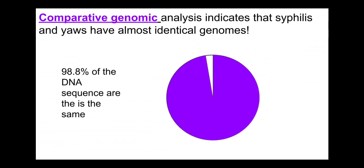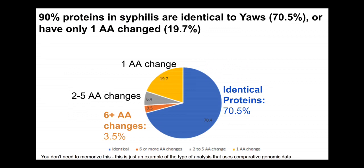The genomes of both organisms have been sequenced. Even though they have very different symptoms and very different ecologies — syphilis spreads through sexual contact, yaws through physical contact — their genomes are 98.8% the same. At the protein level, incorporating silent mutations that change the codon but not the amino acid, 70.5% of the proteins are identical. Some mutations do impact an amino acid, but about 20% impact just a single amino acid. These genomes are very, very similar.